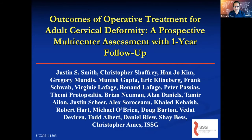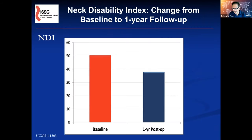Just a couple of slides on outcomes. This is all very preliminary. We have the largest series to date and are getting some improvement in their NDI scores and function EQ5D scores, but we're not moving the needle as much as we had hoped. Still, cervical deformity surgery is improving these patients — it's an active topic for discussion.